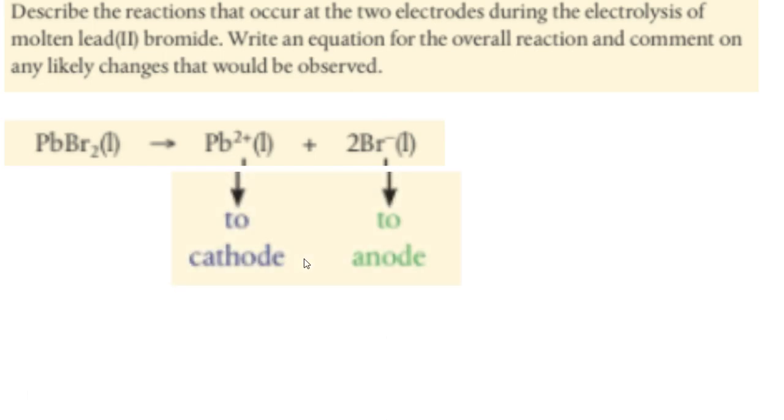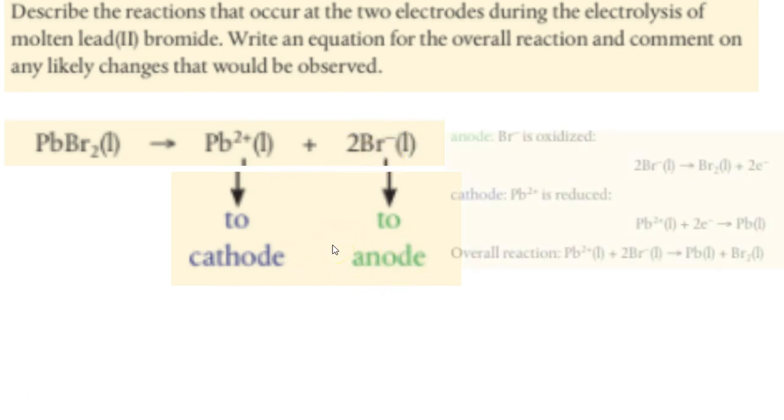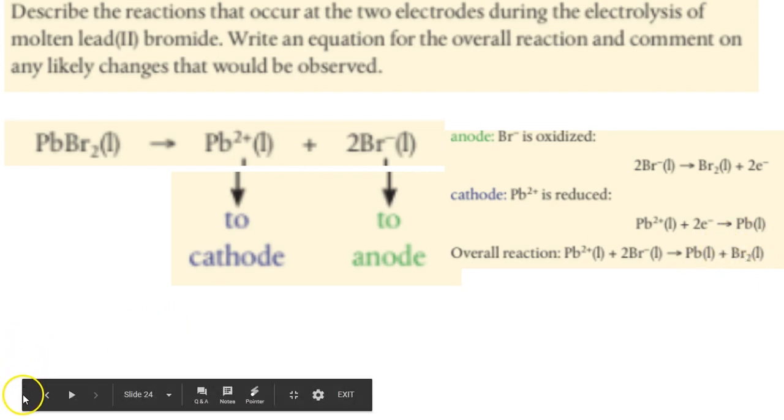And so remember, the positive actually get attracted to the negative cathode, and the negative go to the positive anode. And at the anode, the bromine is oxidized, meaning it is losing electrons. And the cathode, the lead, is getting reduced, meaning it's going to gain electrons. And so what's actually going to happen is we are going to form lead and bromine. So when it says, comment on any likely changes that would be observed, so we'd be able to see this kind of gray metal, the lead, forming on the cathode, and the solution would get kind of brown because bromine is kind of that brown liquid color.